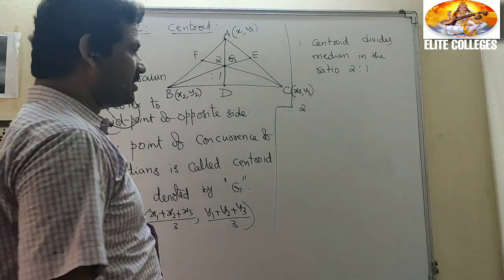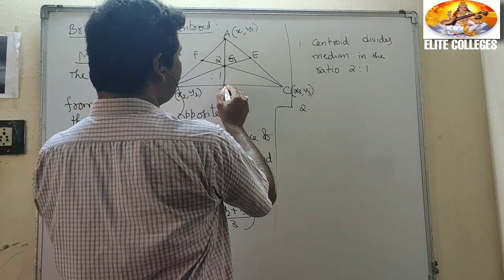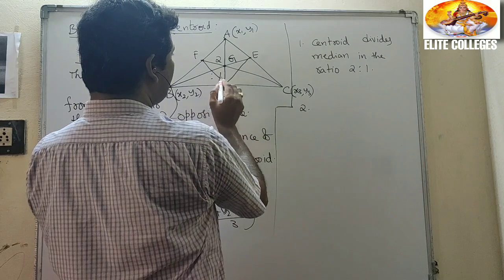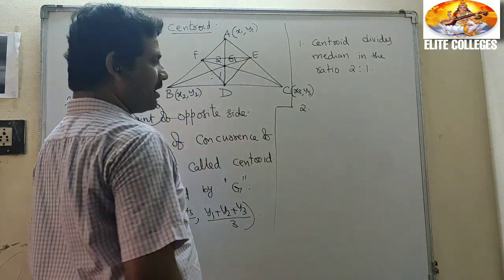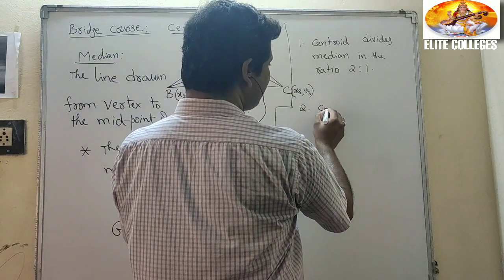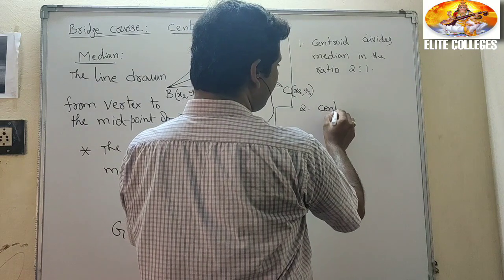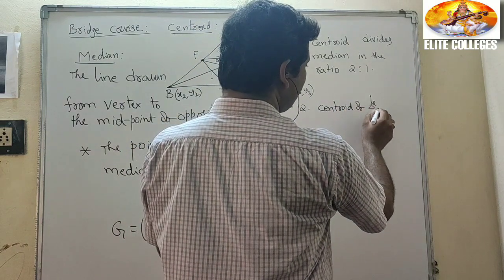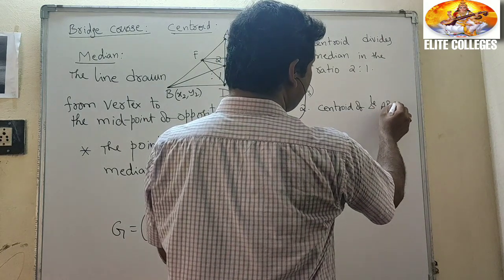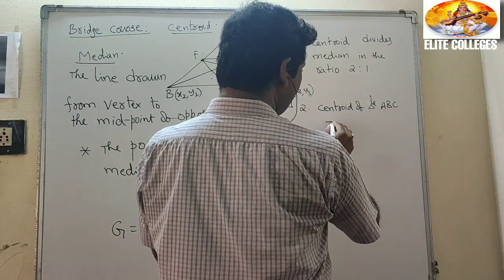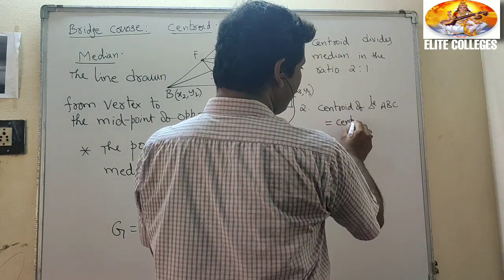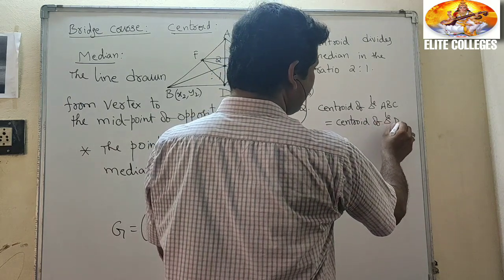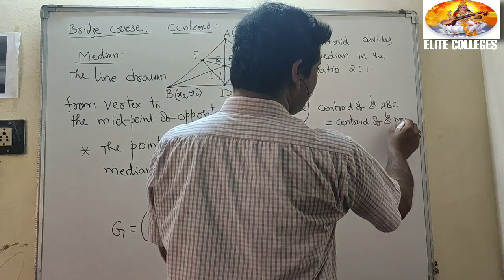Already yesterday we discussed this property. This is triangle DEF. The second property is: the centroid of triangle ABC is equal to the centroid of triangle DEF.